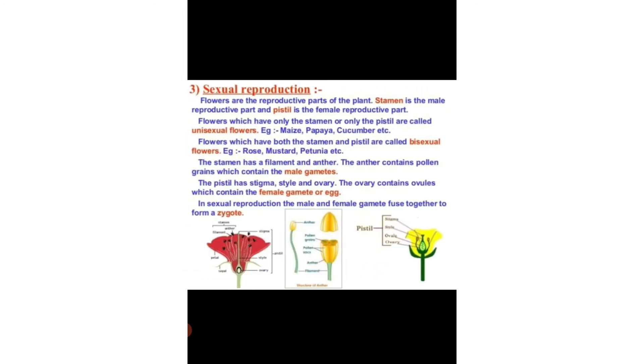Now we will learn about sexual reproduction. Flowers are the reproductive parts of the plant. Stamen is the male reproductive part and pistil is the female reproductive part.